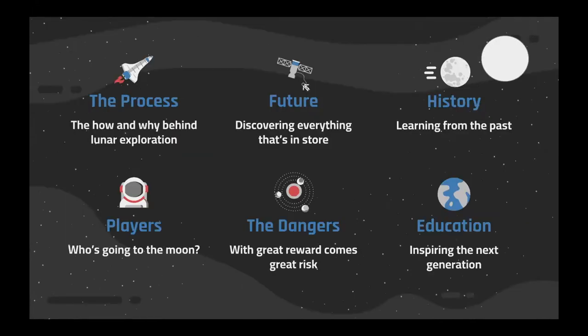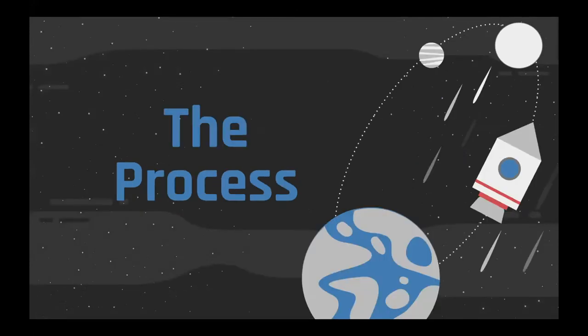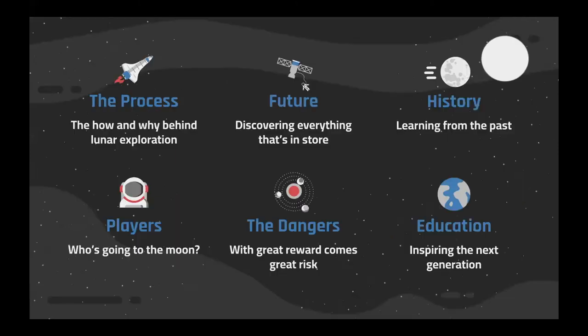And this brings us to our research. So our research was split into six main categories. The Process was the first one, which looked into explaining big questions lunar exploration asking, a lot of the hows and whys behind why we do things the way that we do. The Future entailed everything that is to come, including databases of upcoming mission launches and future progress. History took a look into the past and how we use the information we gained then in our current society. We called all the parties involved in lunar exploration the Players. The Dangers then touched on all the elements of lunar exploration to be wary of, as with great reward comes great risk. And then finally, we included an Education section to link to resources that can be used in and out of the classroom.